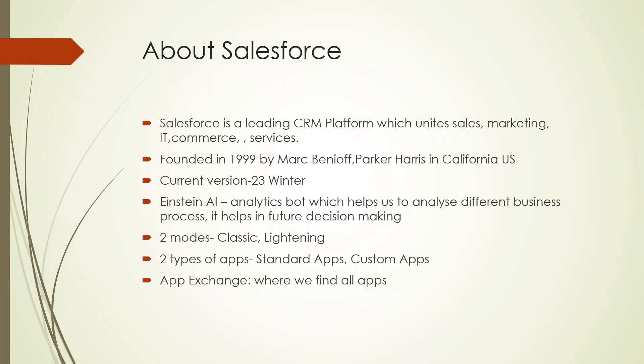Next is Einstein AI. Einstein AI is an analytics bot released by Salesforce itself. This bot helps us analyze different business processes and aids in decision making — for example, it can give suggestions on whether to accept an opportunity or not. Coming to Salesforce modes: up to around 2017, there were two modes — Classic and Lightning. Classic is the basic version of Salesforce.